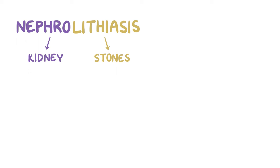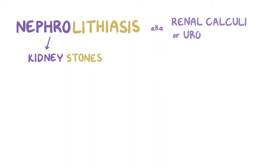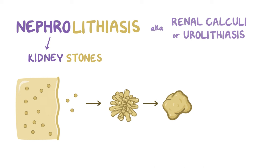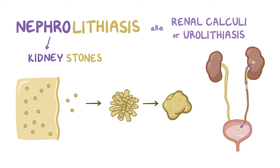Nephrolithiasis — nephro refers to the kidney and lithiasis means stones, so nephrolithiasis means kidney stones, sometimes also referred to as renal calculi or urolithiasis. Kidney stones form when solutes in the urine precipitate out and crystallize, and although these most commonly form in the kidneys themselves, they can also form in the ureters, the bladder, or the urethra.